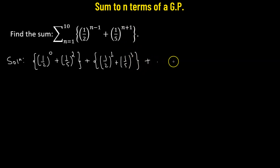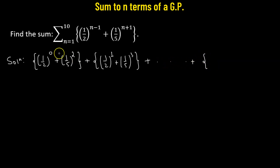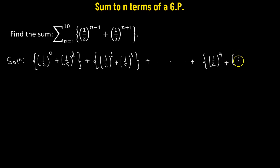Then we have the third term, fourth term, fifth term, and this goes on to the last term. The last term will be when n equals to 10, so we have one-half raised to the power of 9 plus 1 over 5 raised to the power of 11.